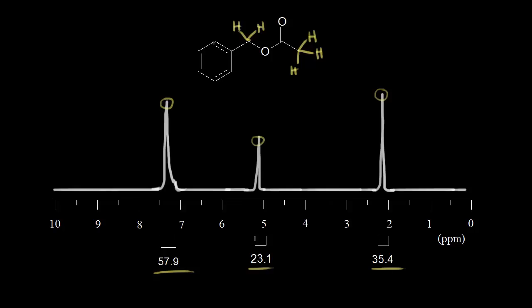And then on our ring, we have five more protons. Going around the ring here, we have five more for a total of 10. We need to account for 10 protons in our spectrum.